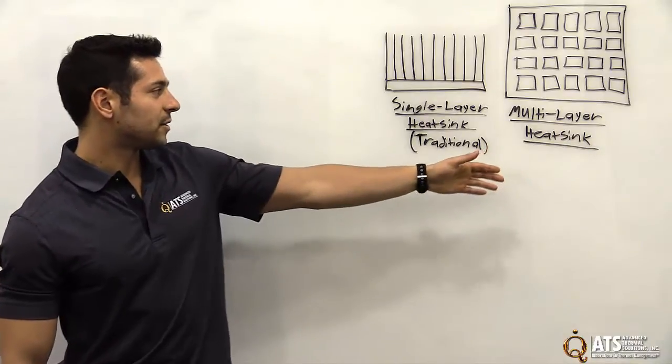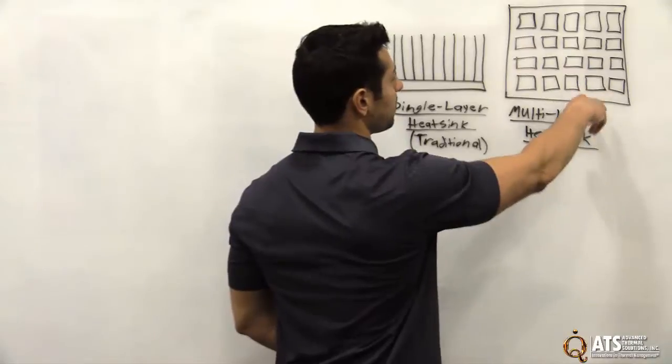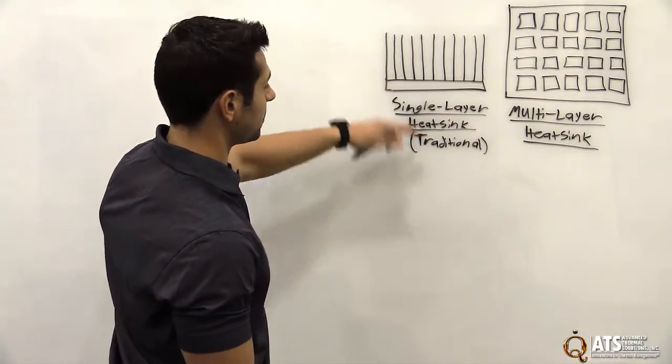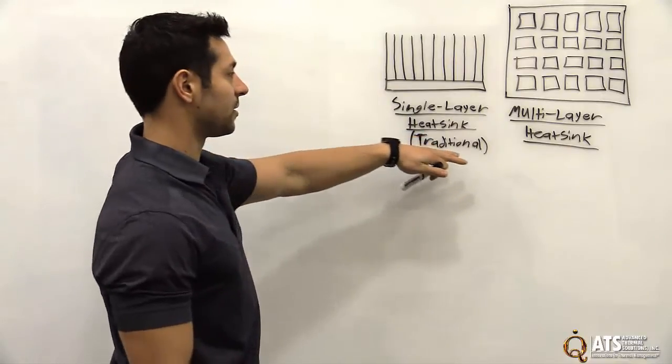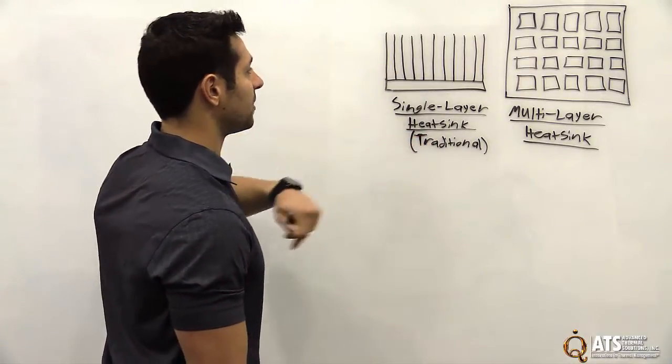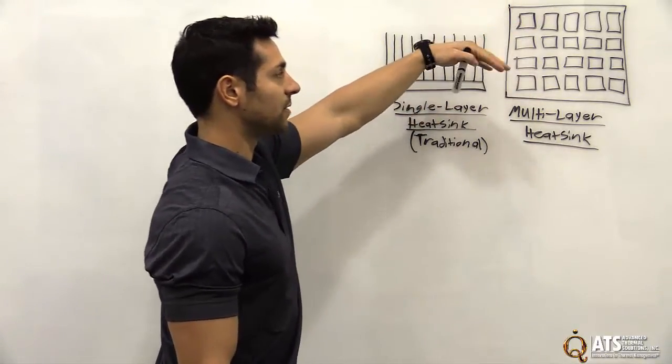On my left here you can see a multi-layer heat sink which has many channels and many layers. On the left here you can see a single-layer heat sink, which is more of a traditional heat sink with just your standard fins and just one row of channels versus many rows of channels.